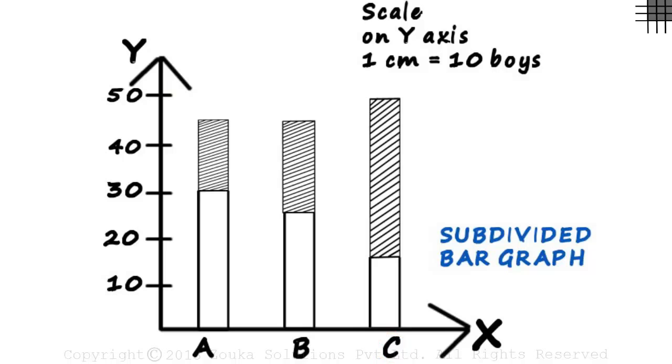And looking at the different styles of bars, it helps us compare the number of boys and girls in one particular division. Just by looking at the bars, you can say that Division A has more boys compared to the girls in that division. Division C has more girls than boys.